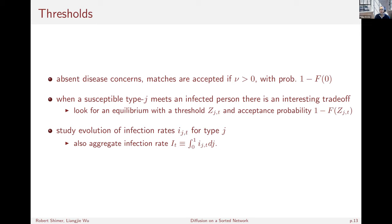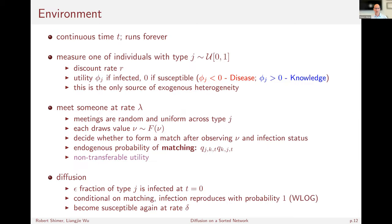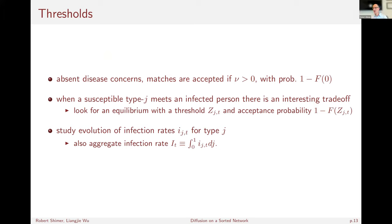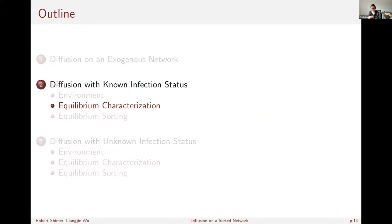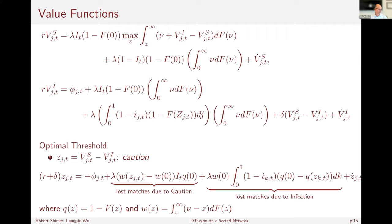A question was raised about whether it matters that disease transmits with probability one — replacing Lambda with Lambda times beta-naught everywhere handles that. Another question: does it matter that you observe infection status? We'll come back and talk about unknown infection status. It definitely matters that you know the infection status, and we'll give the characterization where you don't know. We now have two value functions — one for susceptible individuals and one for infected individuals.